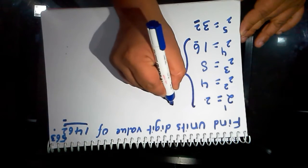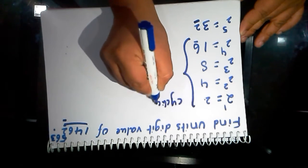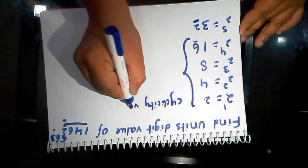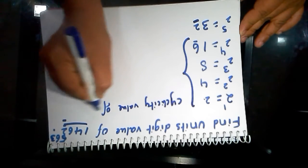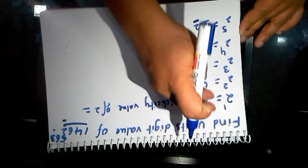Now, cyclicity value of 2 is 1, 2, 3, 4 - for every 4 times it is repeating. The cyclicity value of 2 is 4.